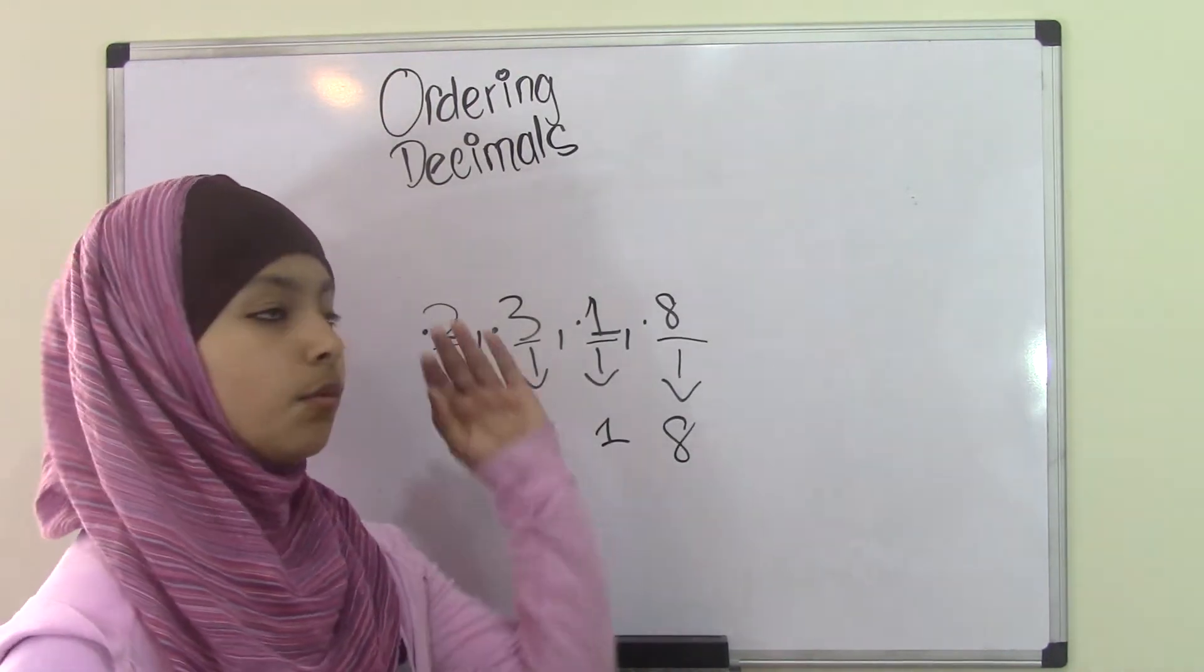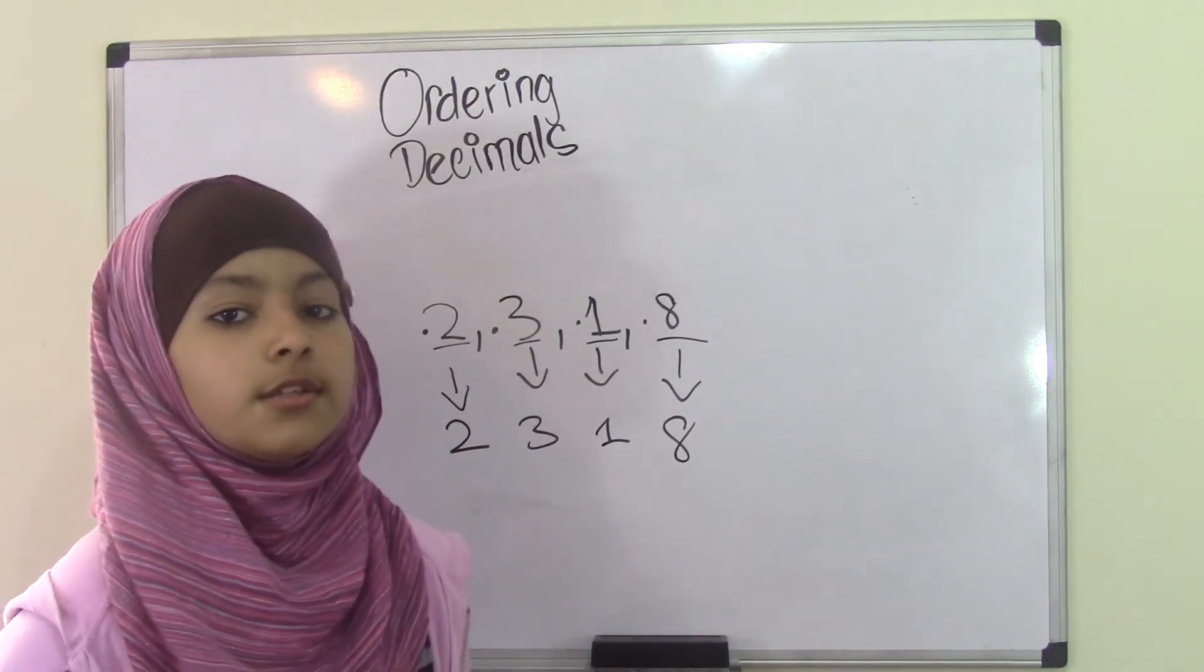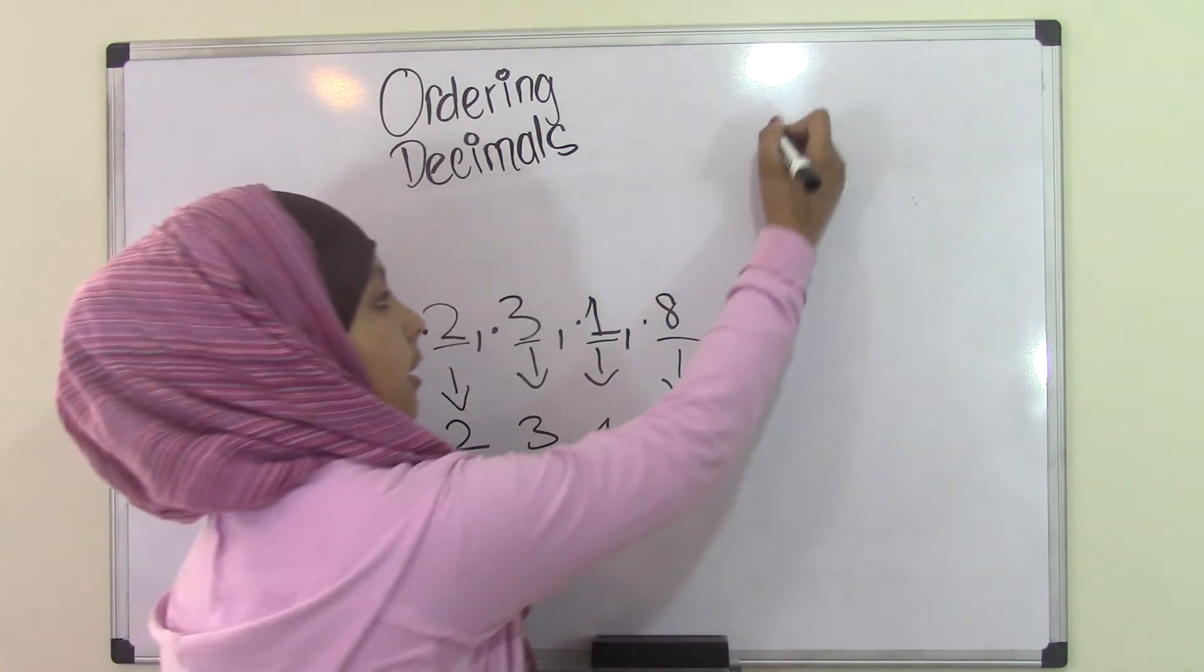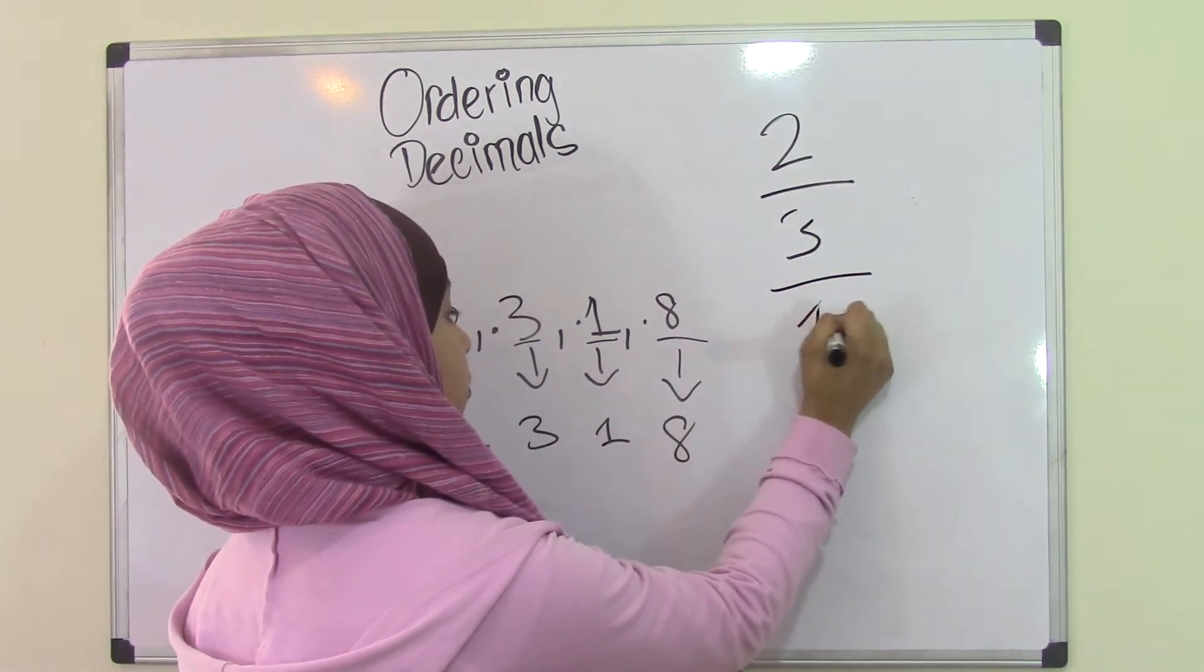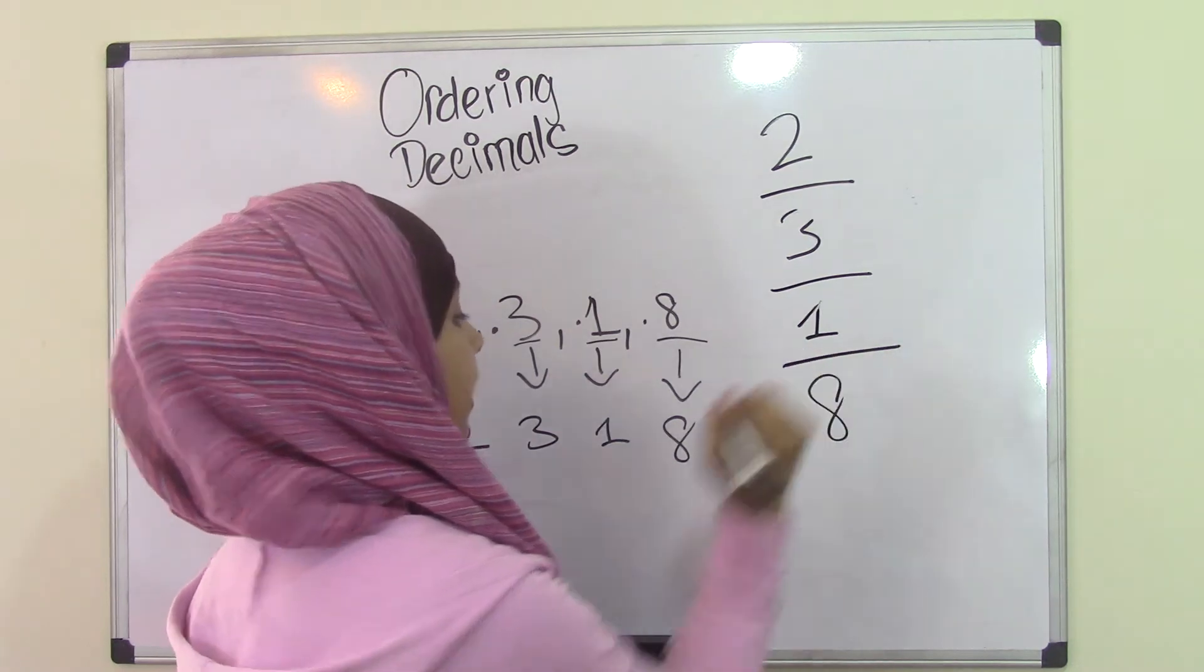We'll write those in vertical form on the other side so that it's more clarified. So we'll have 2, 3, 1, and 8.